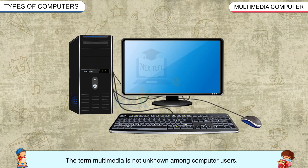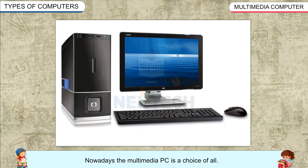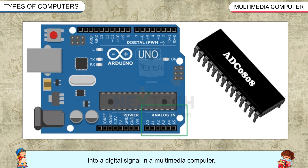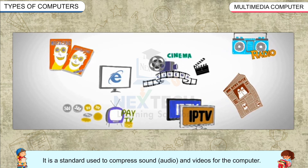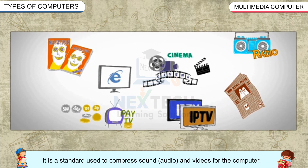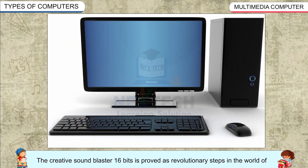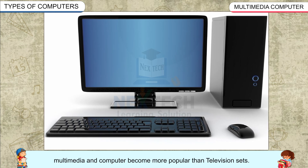Multimedia Computer: The term multimedia is a combined form of two or more media like text, graphics, sound, animation, etc. Nowadays, the multimedia PC is a popular choice. An Analog-to-Digital Converter (ADC) converts the sound wave into a digital signal in a multimedia computer. Without MPEG (Motion Picture Expert Group), multimedia is incomplete. It is a standard used to compress sound, audio, and videos for the computer, named MPEG-1, MPEG-2, etc. The Creative Sound Blaster 16-bit proved to be a revolutionary step in the world of multimedia, and the computer became more popular than television sets.